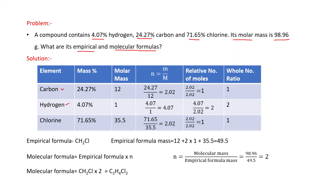Write the name of each element: carbon, hydrogen, chlorine. Their mass percentages are 24.27, 4.07, and 71.65 respectively. Their molar masses are: carbon 12, hydrogen 1, and chlorine 35.5. Now find the number of moles by dividing each mass percentage by its molar mass: carbon gives 24.27 ÷ 12 = 2.02; hydrogen gives 4.07 ÷ 1 = 4.07; chlorine gives 71.65 ÷ 35.5 = 2.02.